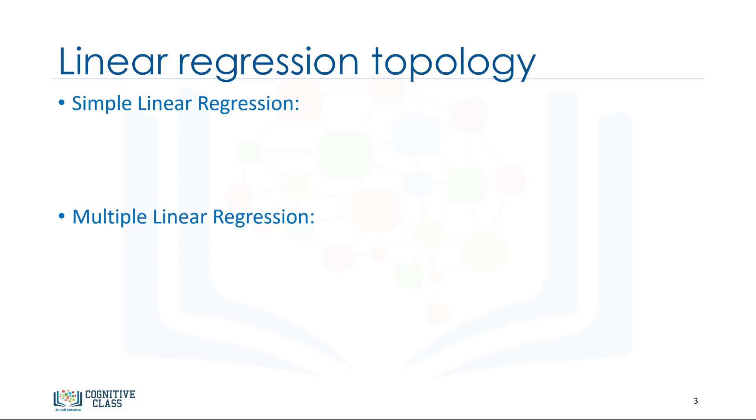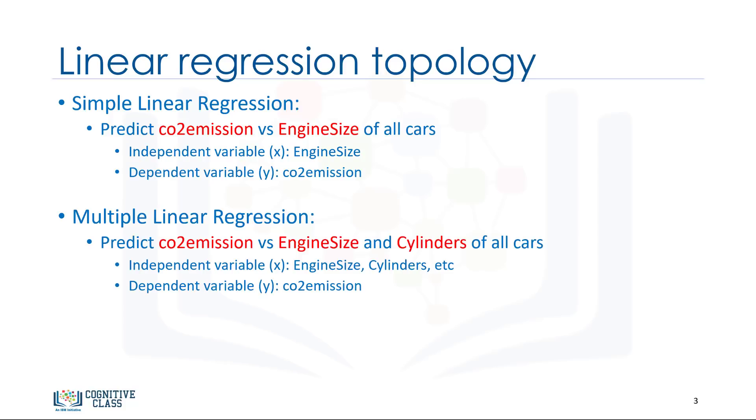The key point in the linear regression is that our dependent value should be continuous and cannot be a discrete value. However, the independent variables can be measured on either a categorical or a continuous measurement scale. There are two types of linear regression models: simple regression and multiple regression. Simple linear regression is when one independent variable is used to estimate a dependent variable. For example, predicting CO2 emission using the engine size variable. When more than one independent variable is present, the process is called multiple linear regression. For example, predicting CO2 emission using engine size and cylinders of cars. Our focus in this video is on simple linear regression.